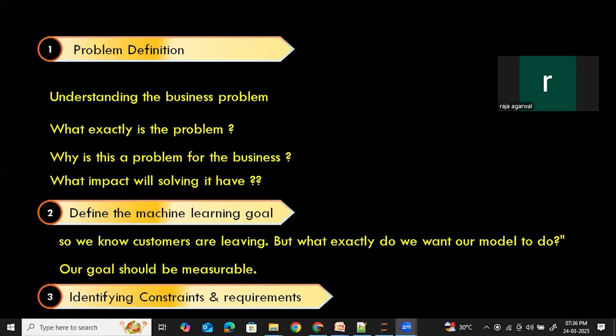To summarize, as part of the problem definition, before even we think about coding or training a model, we need to get these things straight. What problem are we solving? Why does it matter? How do we measure success? And what are the challenges? Think of this stage as setting the GPS before a long journey. If you don't define the problem properly, we will be lost before even we start. Next, we will move on to data collection and exploratory data analysis, where we gather the data needed to solve our business problem.